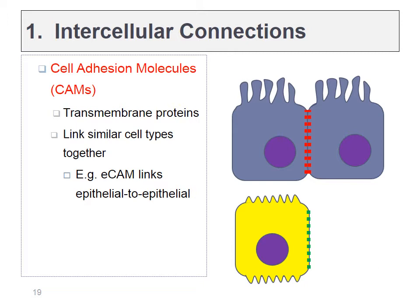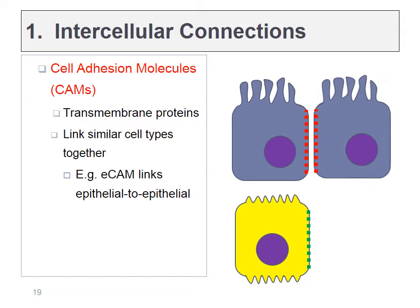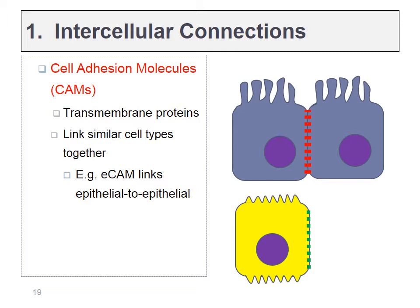Epithelial cells anchor themselves to other epithelial cells using cell adhesion molecules, or CAMs. There are a number of different CAMs throughout the human body. Each tissue type typically has its own CAM, meaning cells of that tissue stick to other cells of the same tissue rather than different cell types. For instance, these epithelial cells would not stick well to muscle cells, only to other epithelial cells.